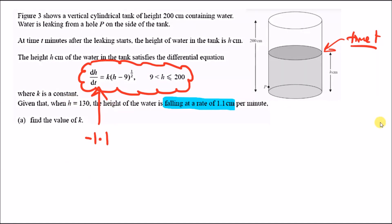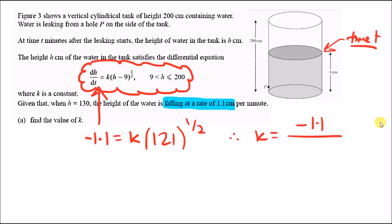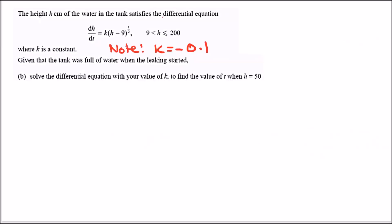All we have to do is find the value k. So: minus 1.1 equals k times the height, which is 130, subtract 9, giving 121, all to the power of a half. Therefore k equals minus 1.1 over the square root of 121, which gives k equals minus 0.1. That's your value of k.